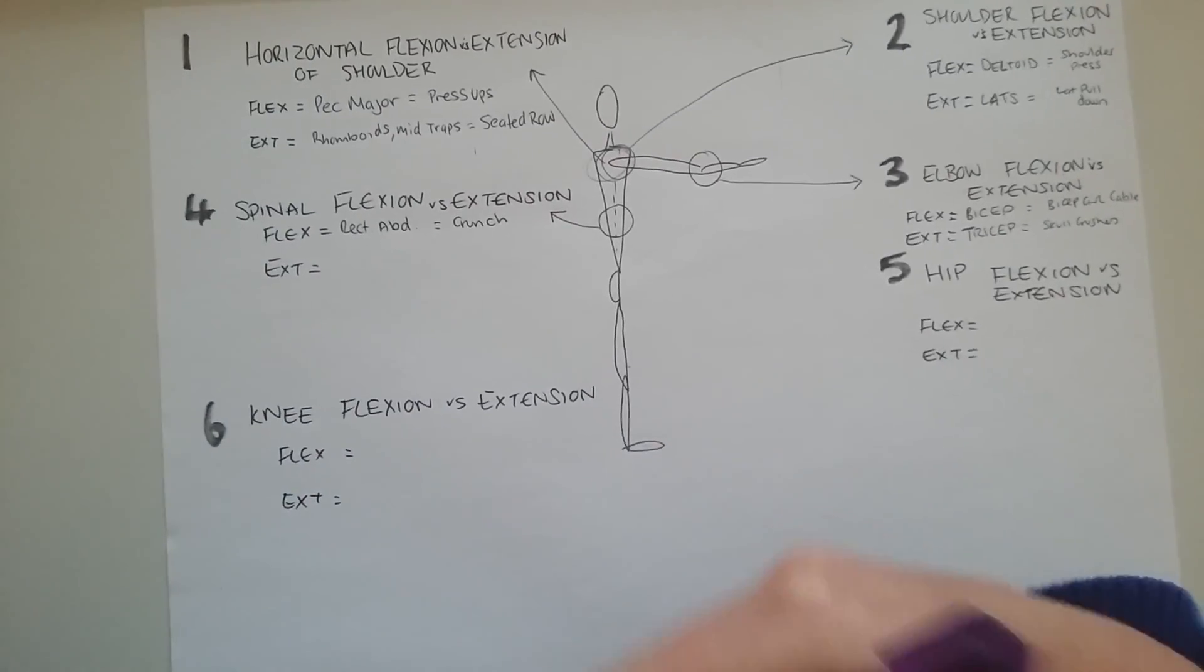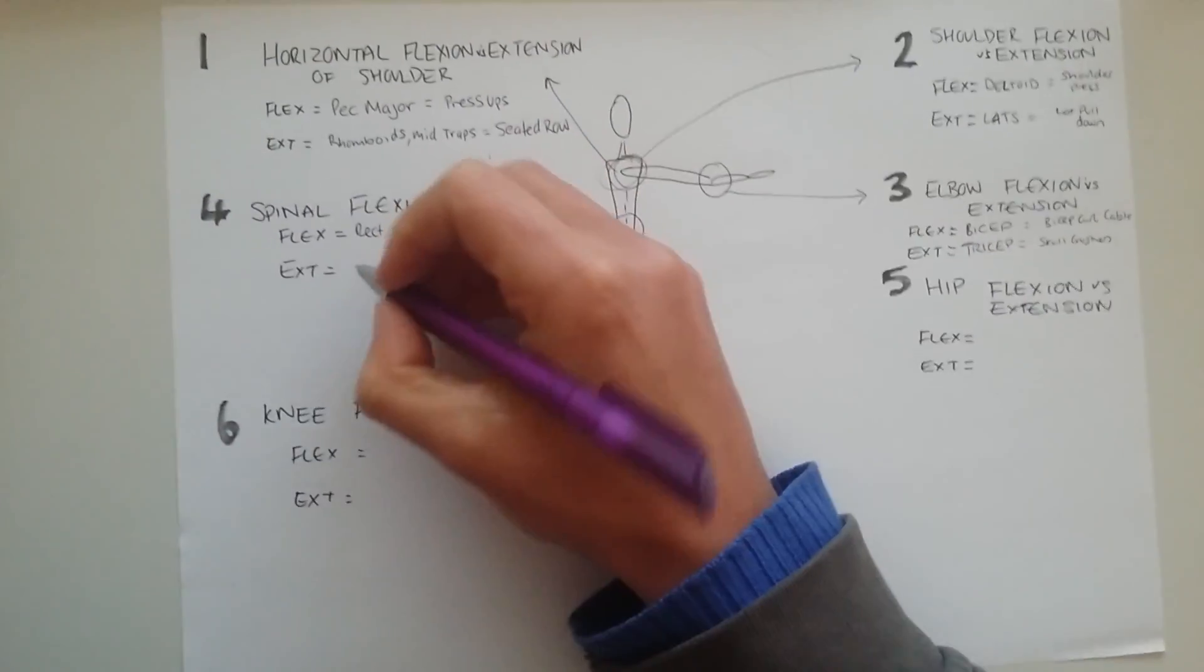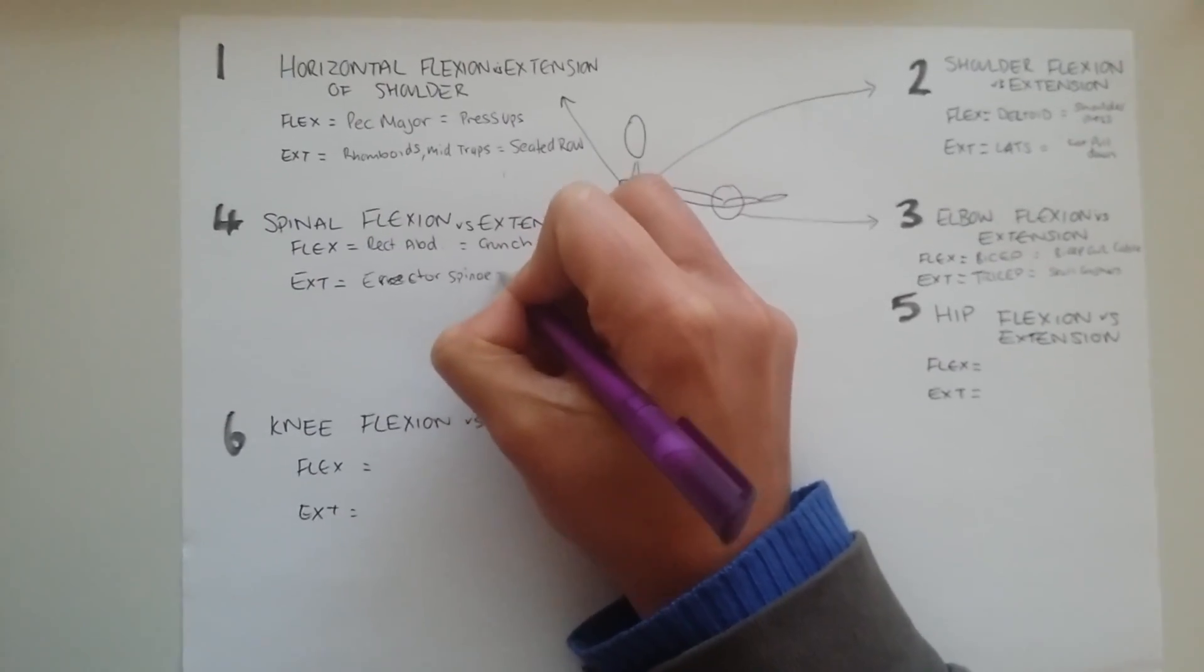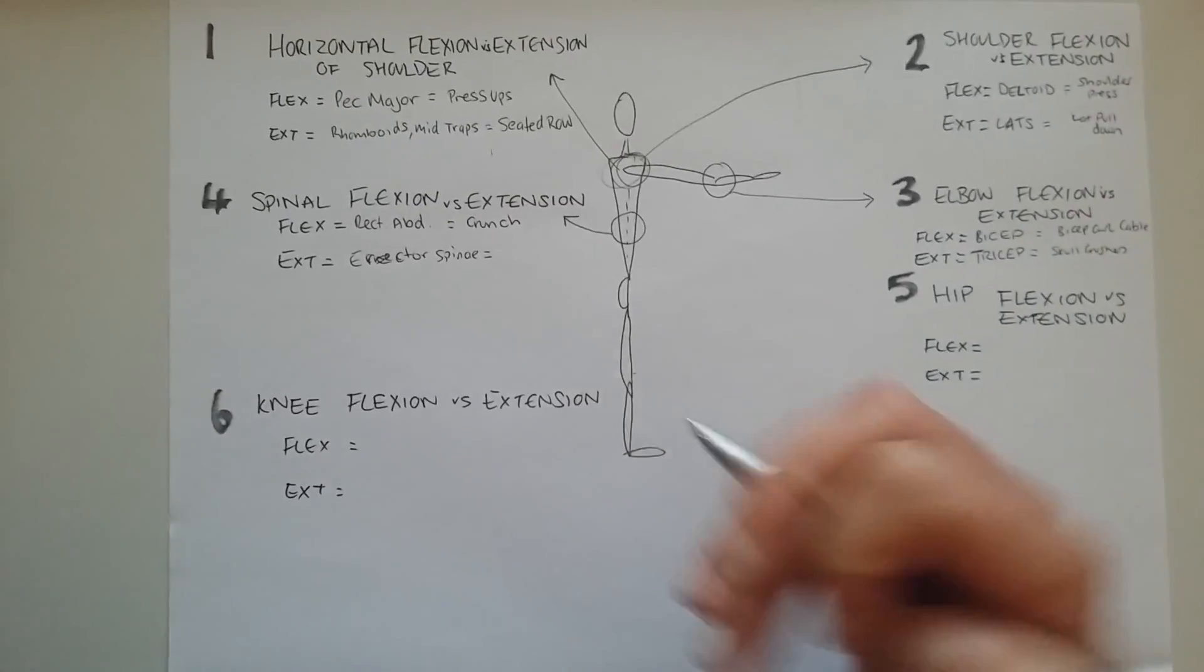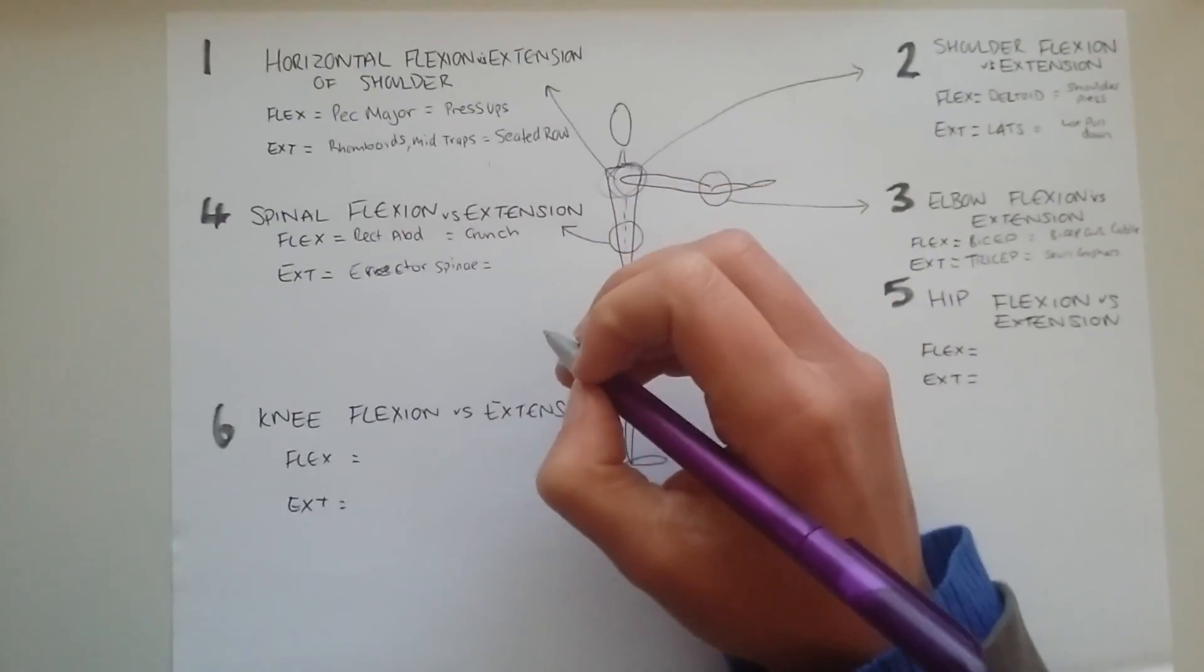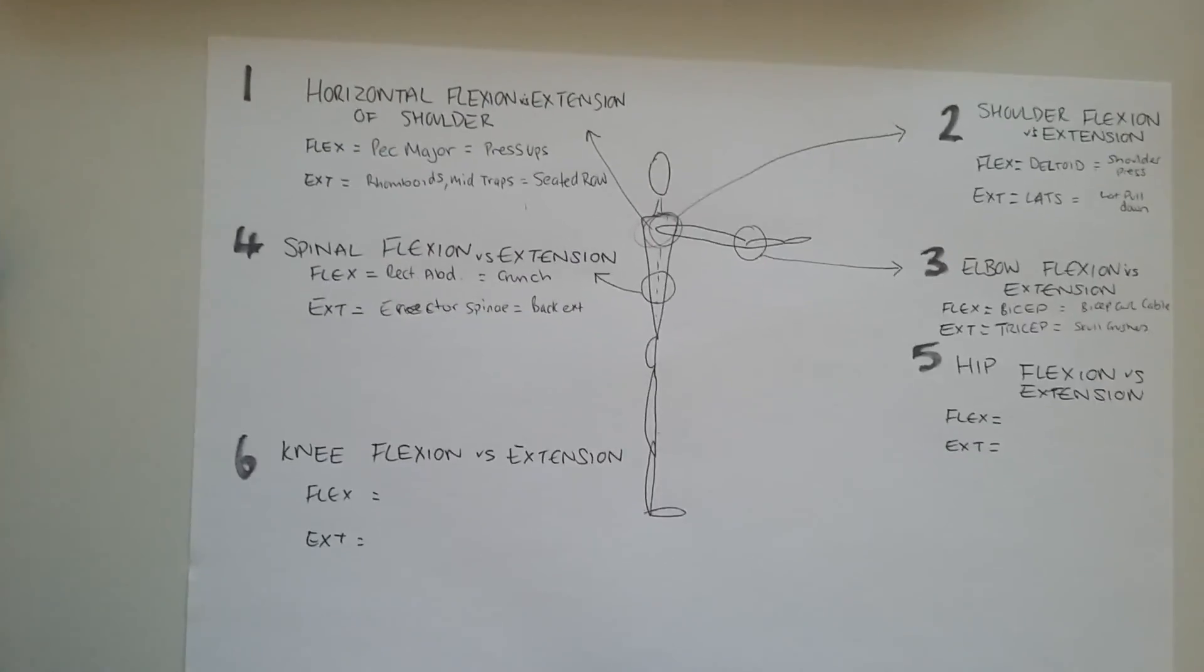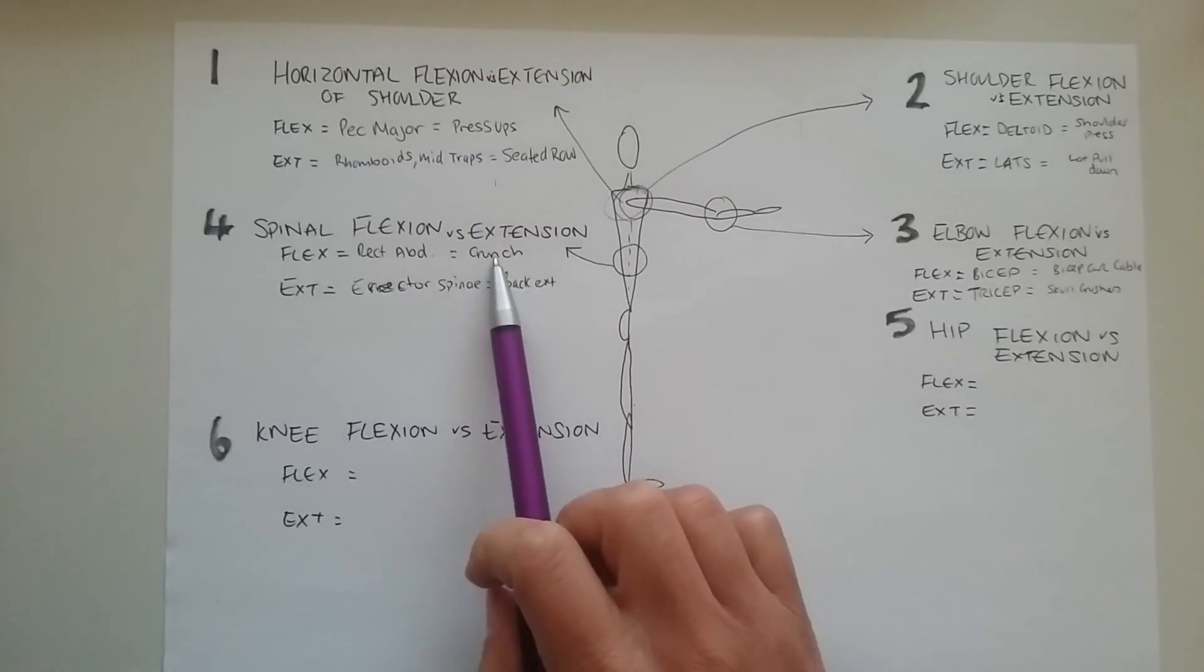But what causes extension of the spine? So I could put in here, obviously, that's going to be our erector spinae. And these are on the back of our body. So if I can spell this right, erector spinae. Now, these run either side of our vertebrae. And they're responsible for bringing us back up to full extension of the spine. And actually, in that position, they're going to be worked during a back extension. They're also worked during a good morning. So all of those type of exercises. And that then gives you two opposing exercises for that joint.